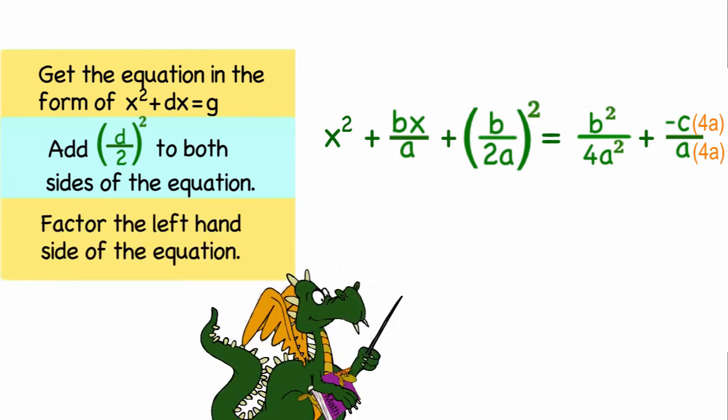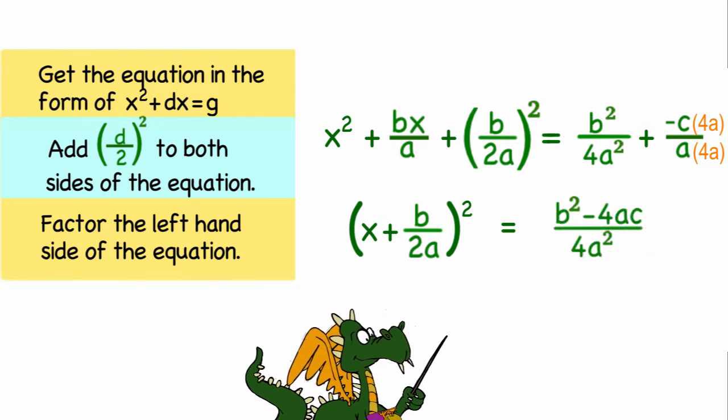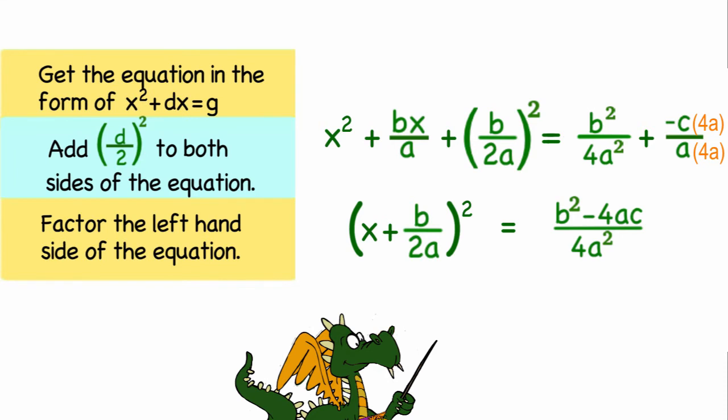The next step will be to factor the left hand side, which gives me x plus b over 2a quantity squared, and on the right hand side I'm going to go ahead and complete the addition and I will end up with b squared minus 4ac divided by 4a squared.